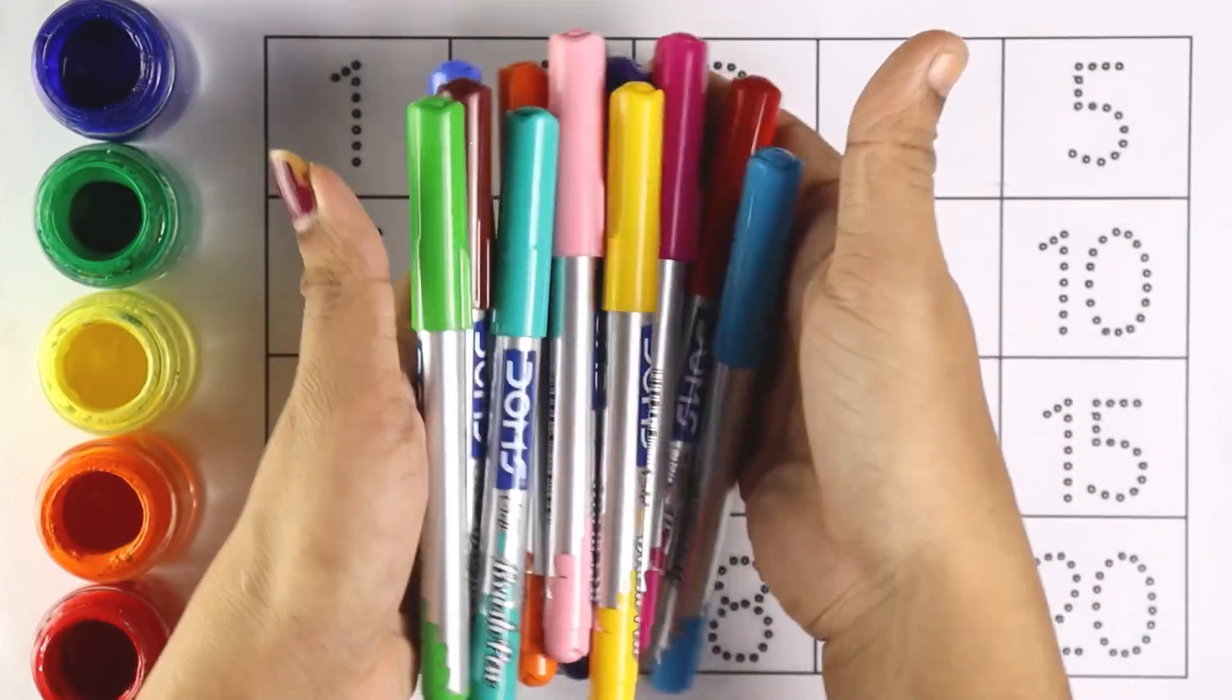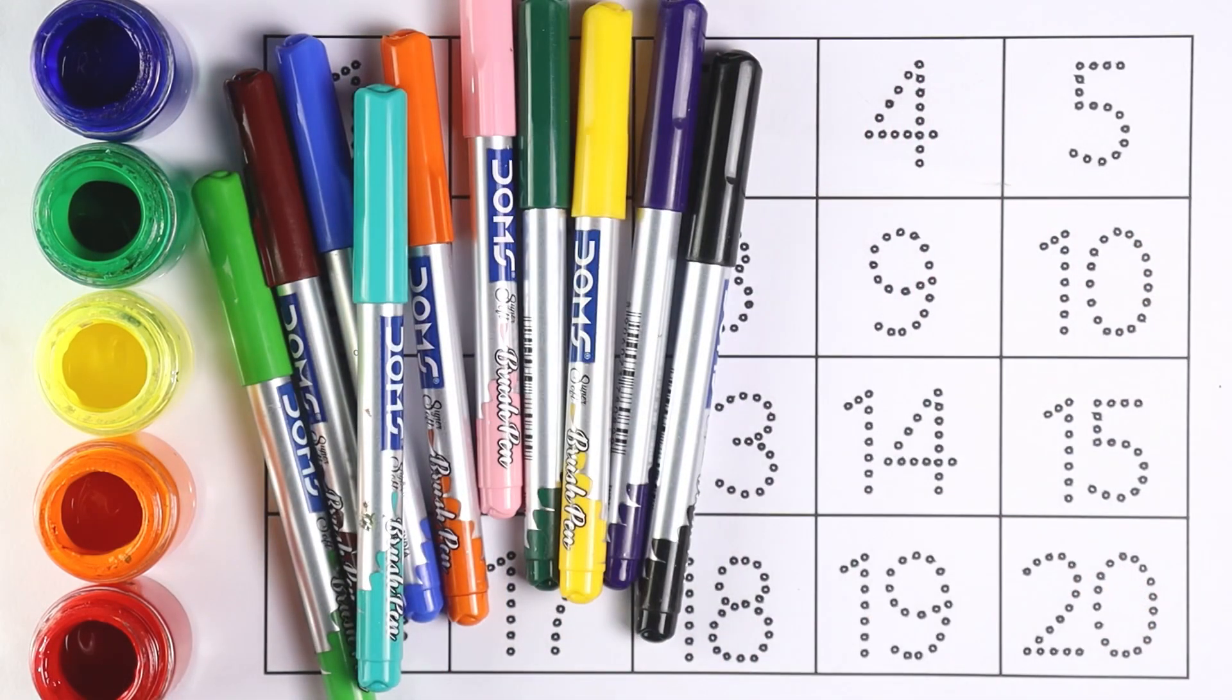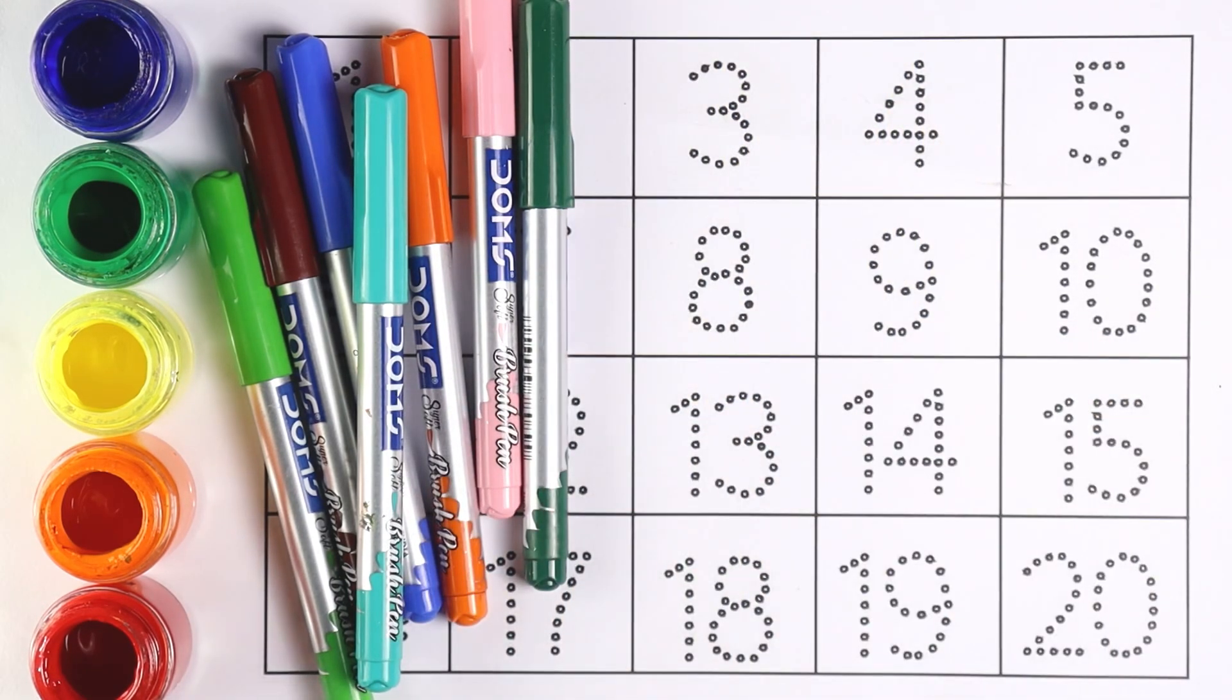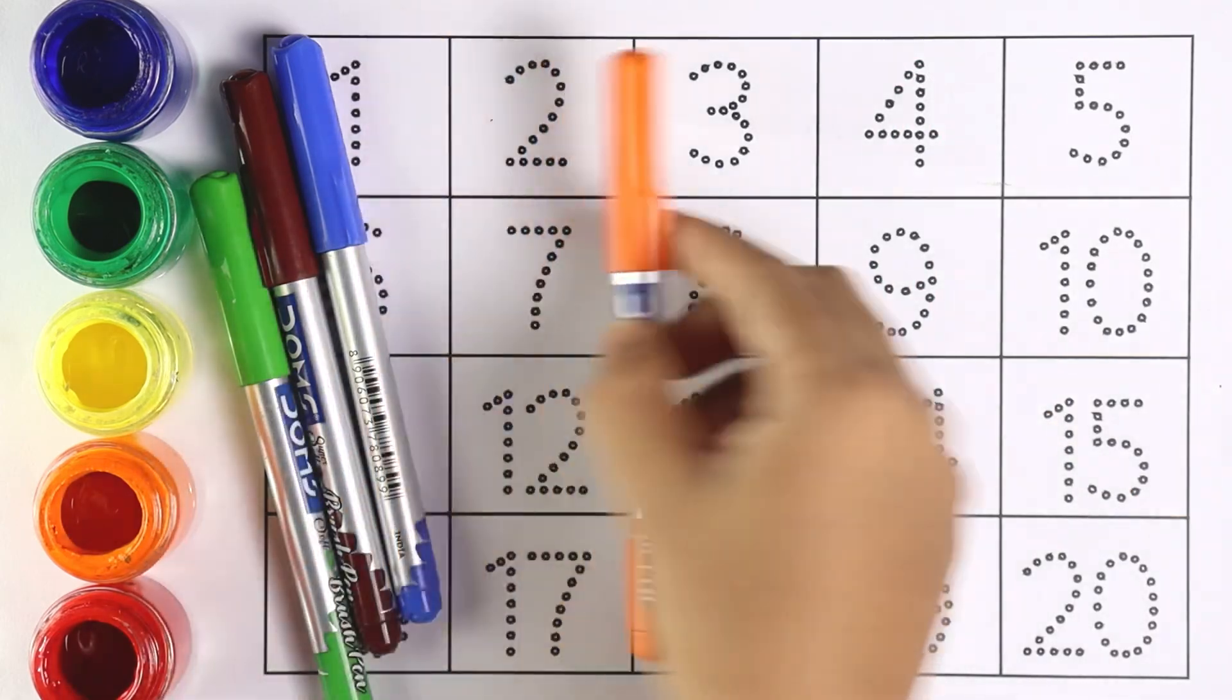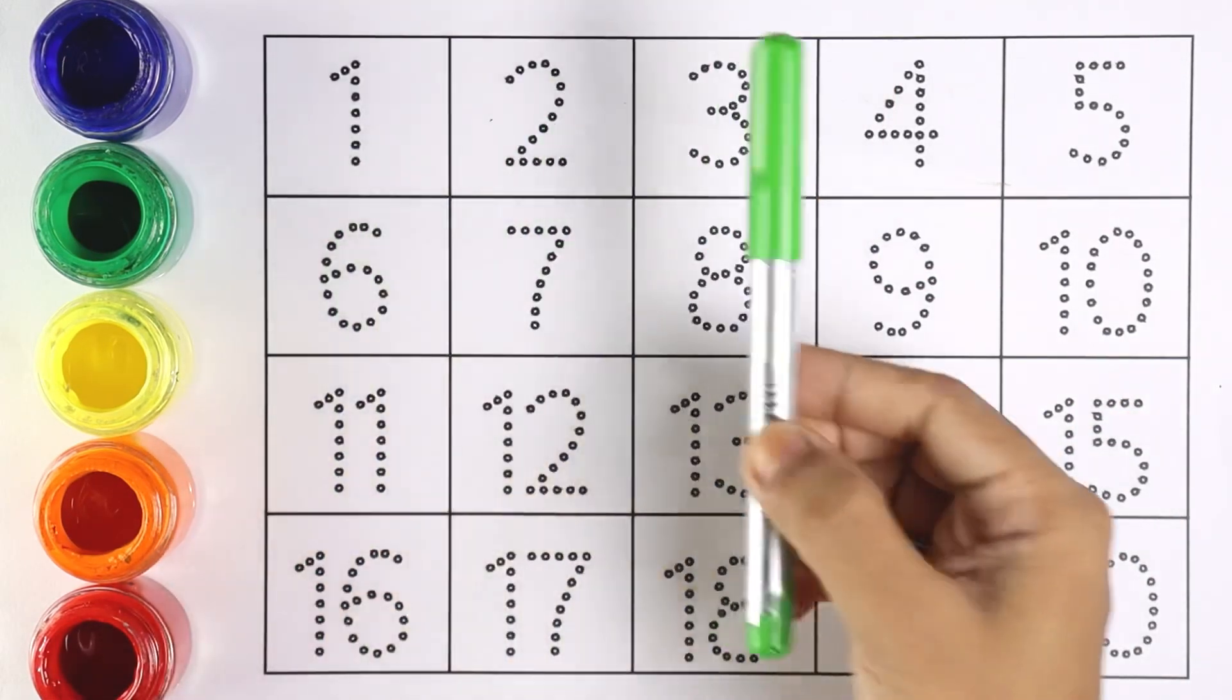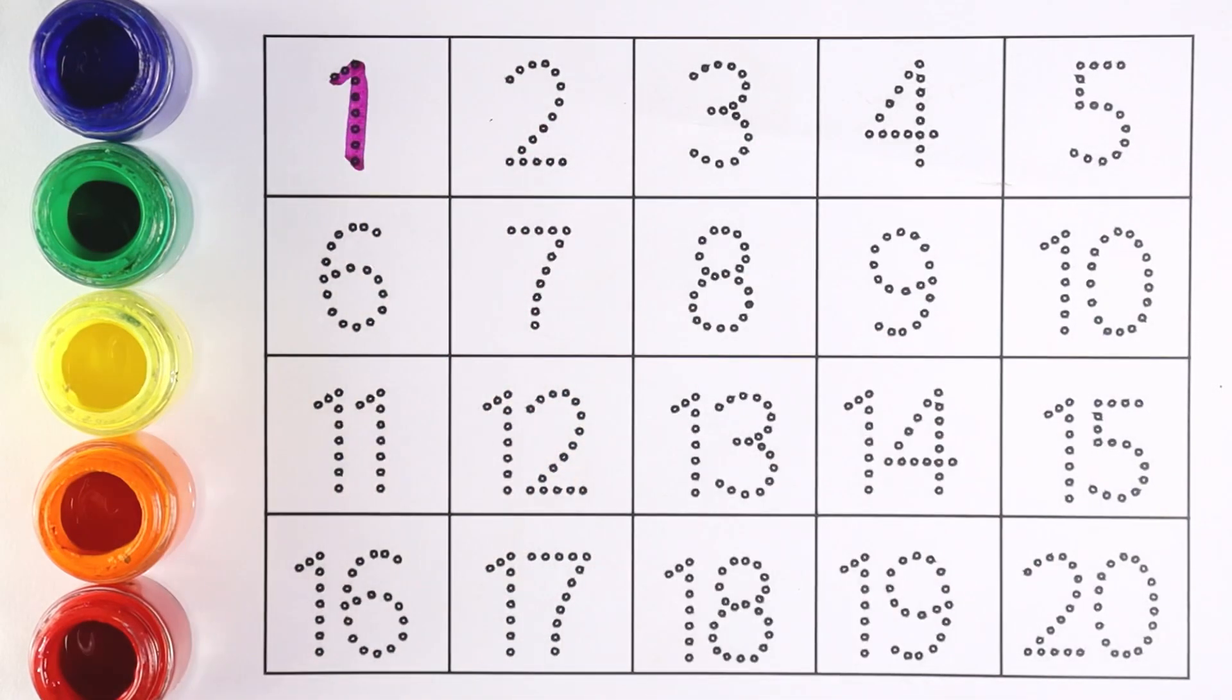With colors: sky blue color, red color, pink color, black color, purple color, yellow color, green color, light pink color, light blue color, orange color, blue color, brown color, and light green color. Let's start writing number 1.